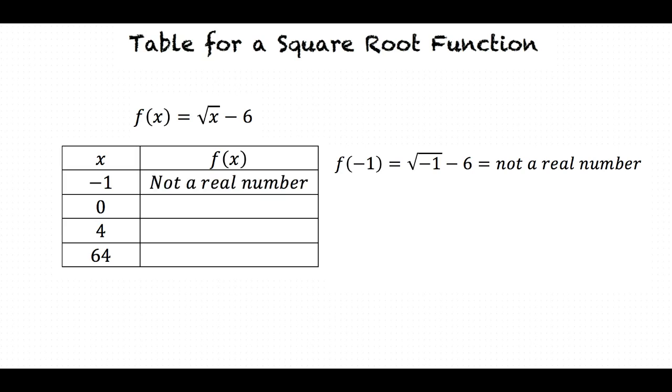Now let's solve for f(0). f(0) is equal to the square root of 0 minus 6, which is equal to 0 minus 6 since the square root of 0 is 0. 0 minus 6 equals negative 6. So in the table under the right column for f(0), we write negative 6.